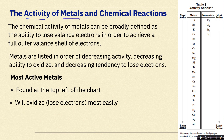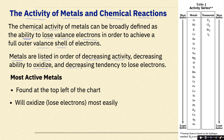The activity of metals and chemical reactions. The chemical activity of metals can be broadly defined as the ability to lose valence electrons in order to achieve a full outer valence shell of electrons. Metals are listed in order of decreasing activity, decreasing ability to oxidize — losing electrons — and decreasing tendency to lose electrons.